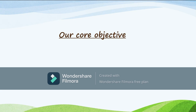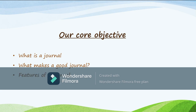Our core objectives for this lesson: we need to understand what actually is a journal, then we are going to get to understand what makes a good journal, and we are also going to look at the features of a journal. And finally, I'll show you a sample journal that has been based on a Cambridge past paper.